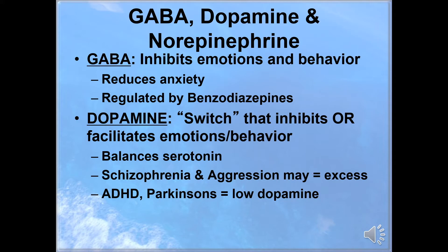Dopamine is a switch that inhibits or facilitates emotions and behavior. It can balance serotonin levels. Deficits in dopamine are associated with Parkinson's disease, while excesses in dopamine are found in schizophrenia. It can create lethargy, decreased goal-driven behavior, and cognitive deficits. There's a theory that schizophrenia is related to an excess of dopamine because of the negative symptoms we see — the lethargy and decreased goal-driven behavior — as well as cognitive deficits. Antipsychotic drugs are thought to alleviate the symptoms of schizophrenia by blocking the action of dopamine. However, dopamine antagonists help with the psychotic symptoms but do not impact the negative symptoms, so we think dopamine may only be involved with some of those symptoms of schizophrenia.